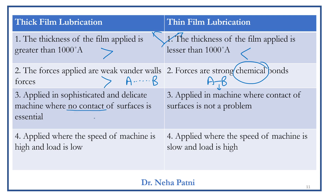Since no contact between surfaces is essential in thick film conditions, it is applied only in sophisticated and delicate instruments where the barrier must be strong. Thin film, however, can be applied to any machine where surface contact is not a critical problem. Regarding speed and load: thick film requires very high speed — a high speed generates pressure, which develops the hydrodynamic wedge so the oil fills the space between the two layers and increases thickness. In thin film, the speed is very low, so that pressure is not created, and when the load is very high, thickness obviously decreases.